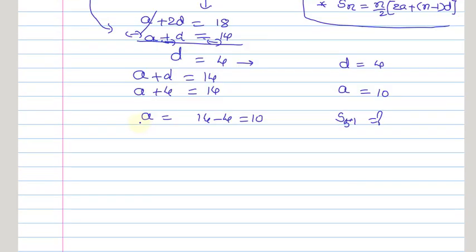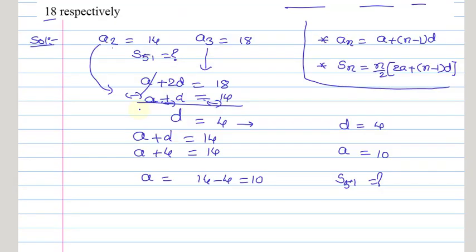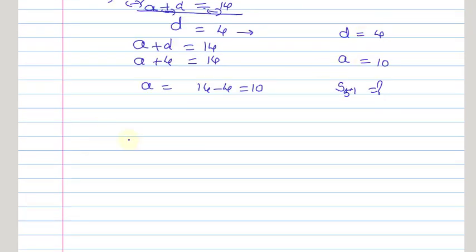For this, we need to make use of the sum formula. S51 is equal to n/2 of 2A plus (n-1) into D. Here, in place of n, we need to take 51, so that we get S51.